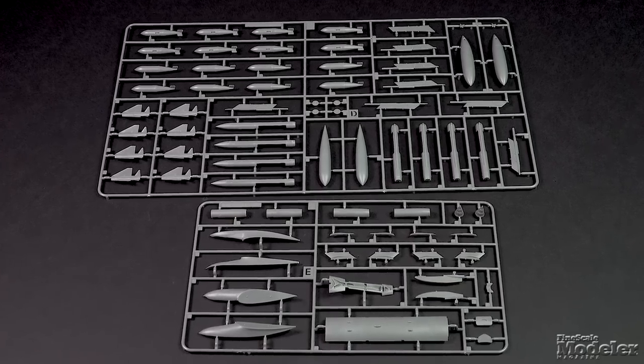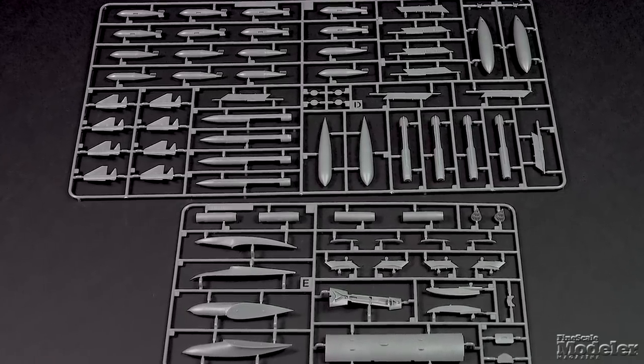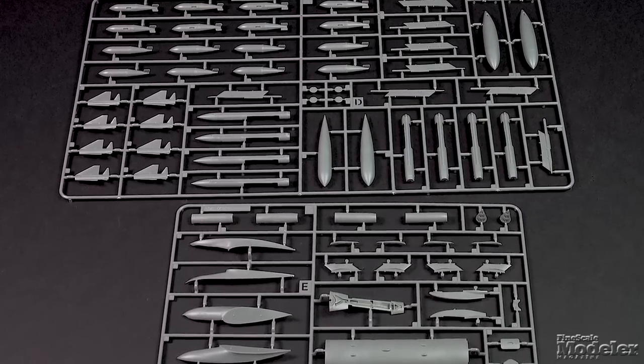Ordnance options include Martel anti-ship and anti-radiation missiles, along with the TV guidance link pod, Matra rocket pods, 1,000-pound bombs, and slipper tanks.